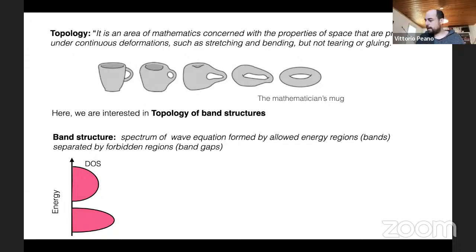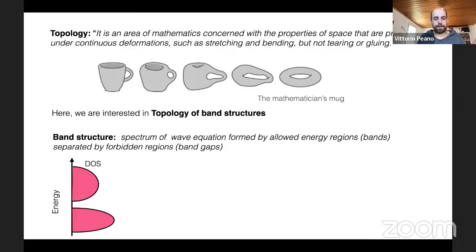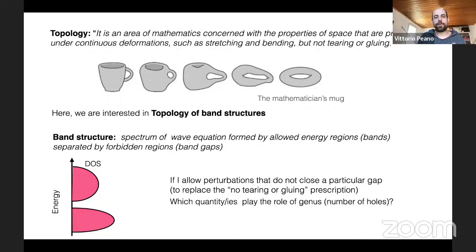A very general phenomenon in crystal structures is interference, so the spectrum naturally divides into allowed energies forming bands separated by band gaps. In this context, topology means: allowing any perturbation of my Hamiltonian that does not close a band gap, and asking which quantities are topological and robust.